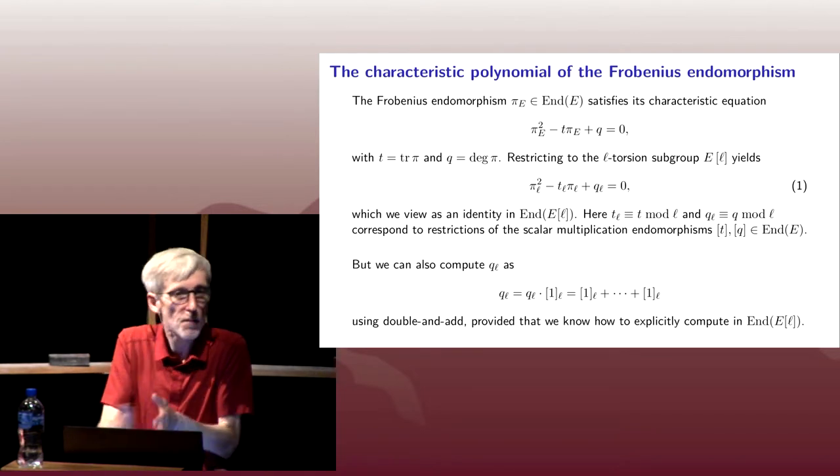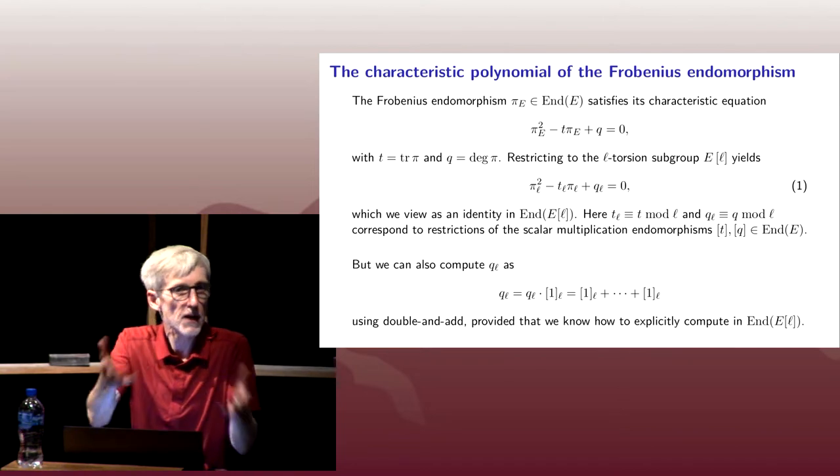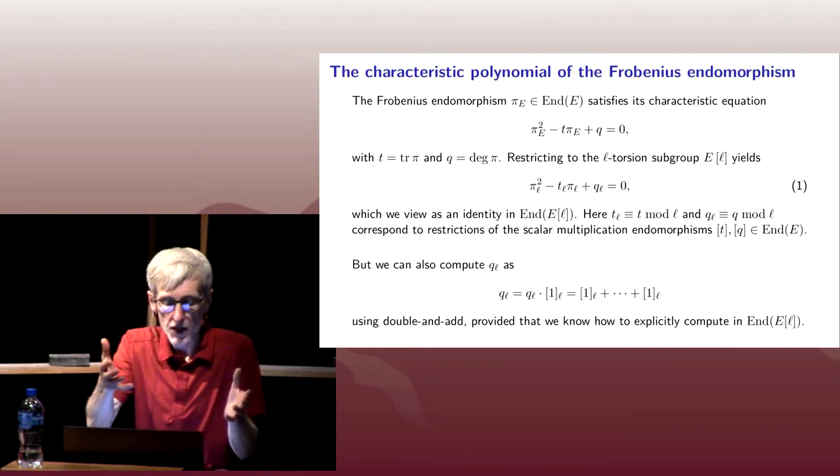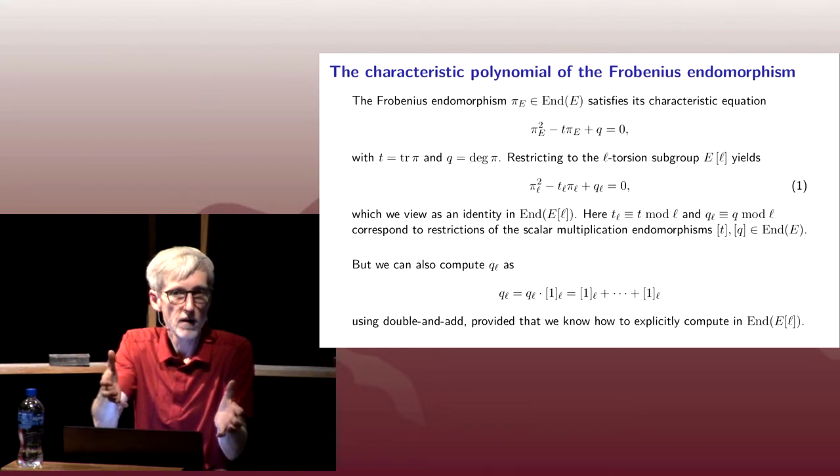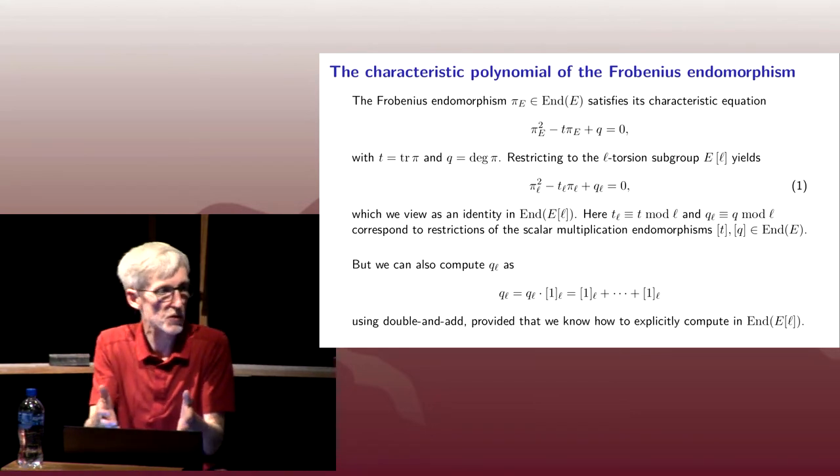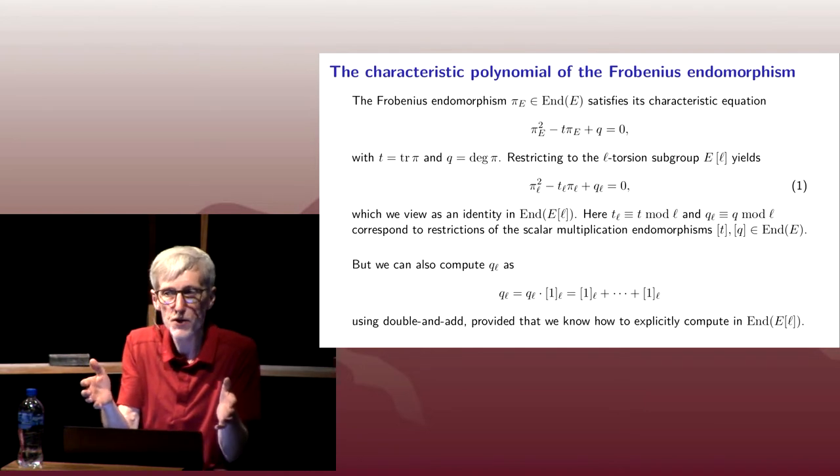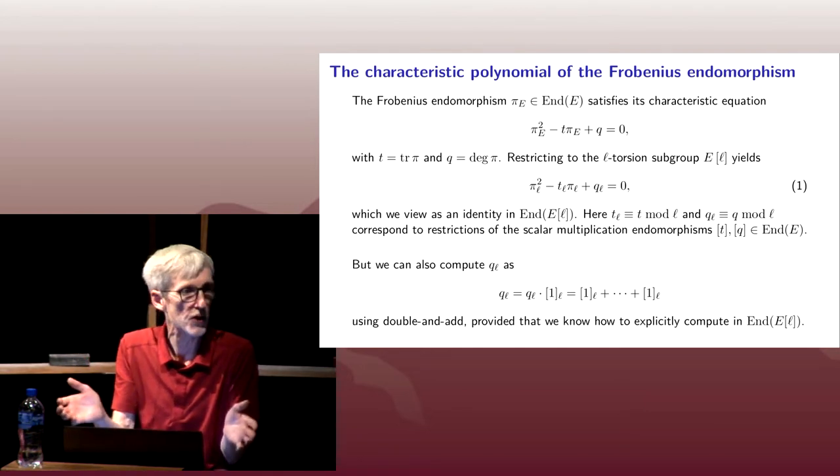We could think about End E[l], the endomorphisms of our l-torsion subgroup, and the Frobenius endomorphism restricts to some particular element of End E[l]. We could even write down those endomorphisms explicitly with two by two matrices with entries in Z mod lZ if we wanted to.